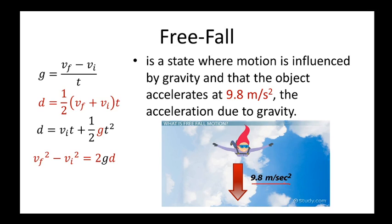In other words, the velocity value will increase by 9.8 meters per second for every second of fall. The equations for free fall are the same as the constant acceleration kinematic equations, but with the g value used as the acceleration.